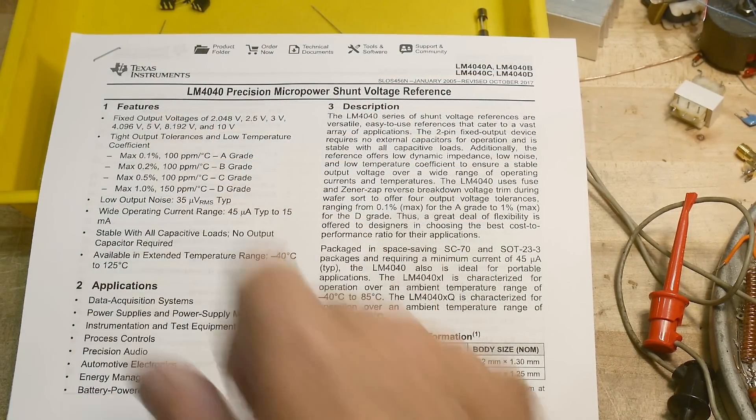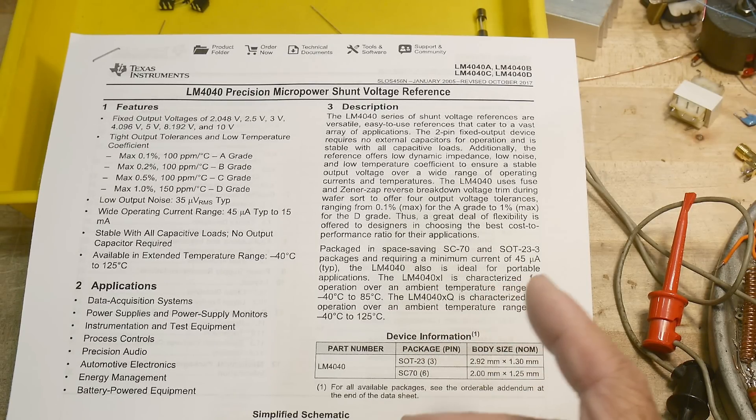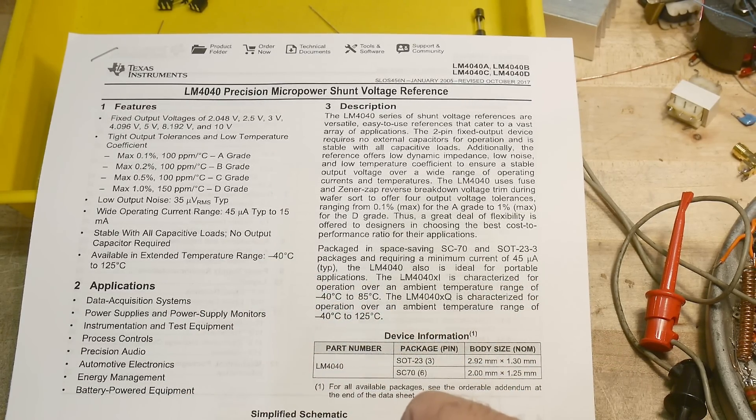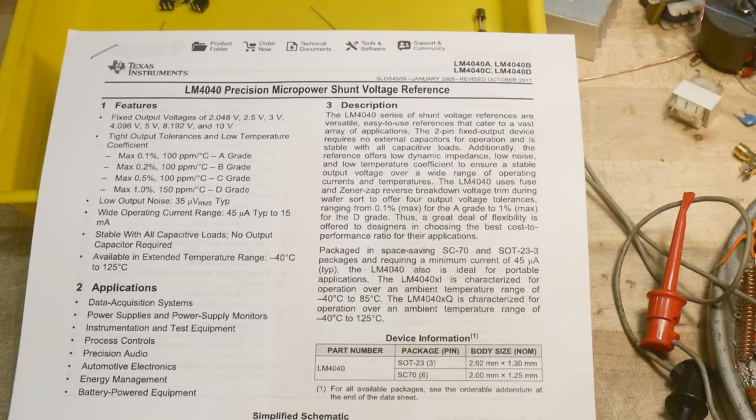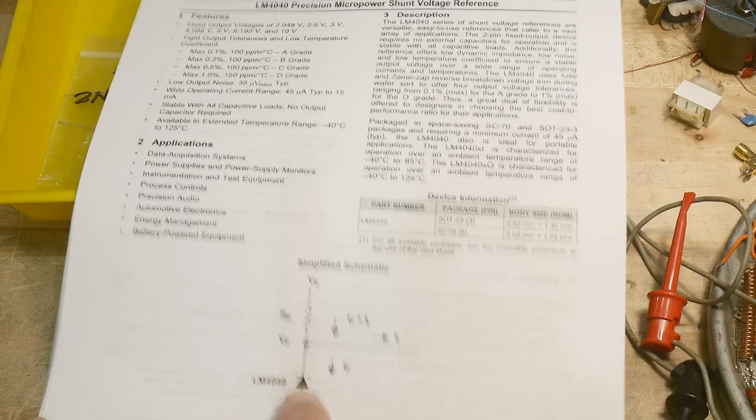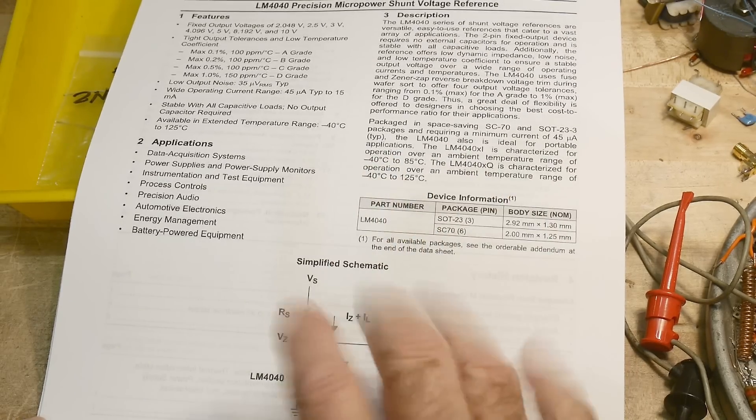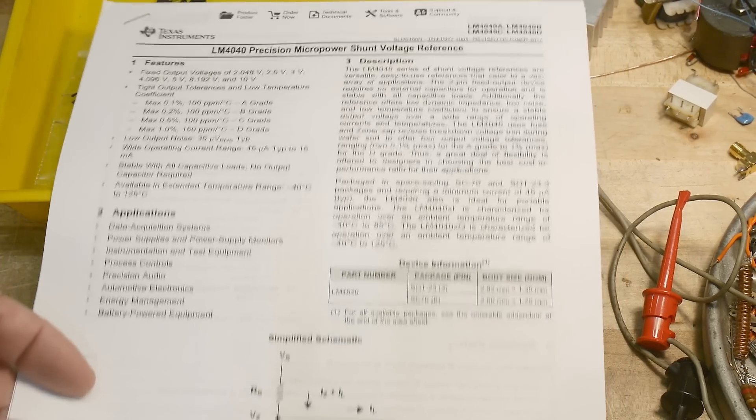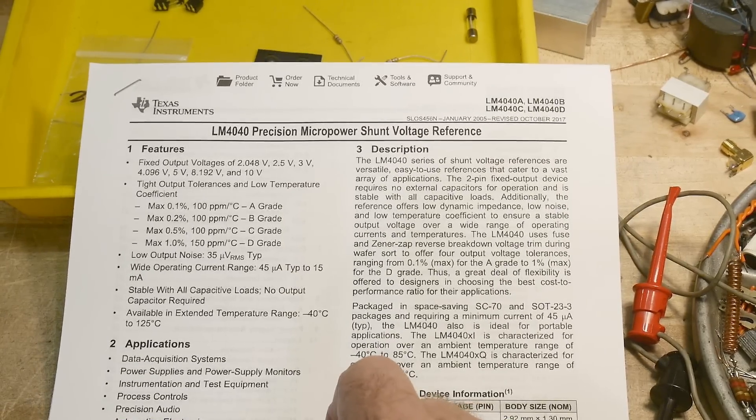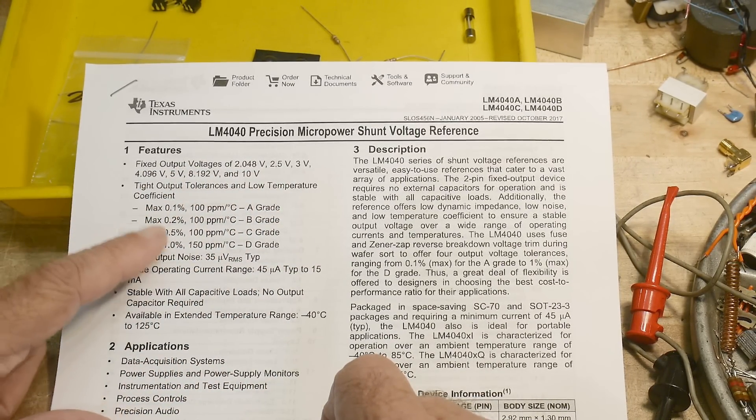Okay. This turns out to be an LM4040. So it didn't say LM on the part. It just said 4040. But it's an LM4040 precision micropower shunt voltage reference. So they draw it as a zener diode and it looks just like a zener diode. You put a resistor on it and you get a voltage out and all that kind of stuff. So it looks just like a zener diode.